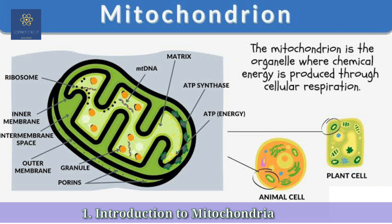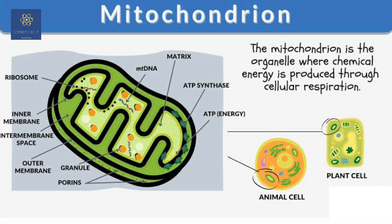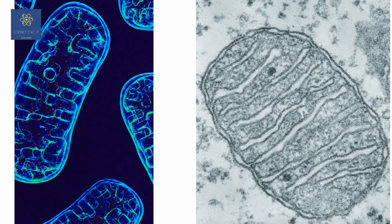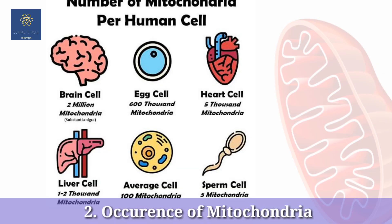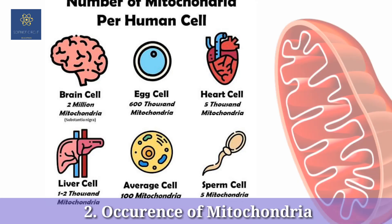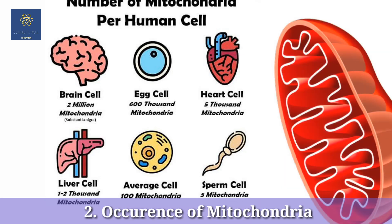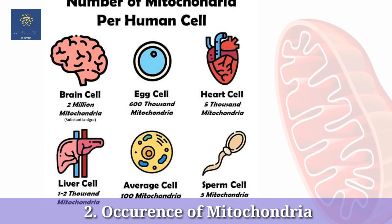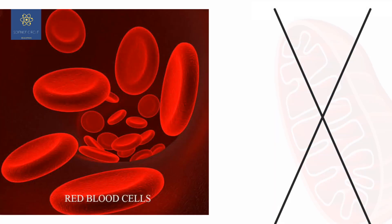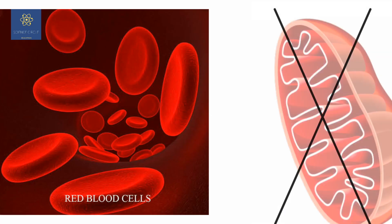Mitochondria, singularly known as mitochondrion, are not easily visible under the microscope unless specifically stained. In each human cell, it contains on average a hundred to a thousand mitochondria, occupying about 25 percent of the cell's volume. However, there is an exception — our mature red blood cells do not contain any mitochondria.